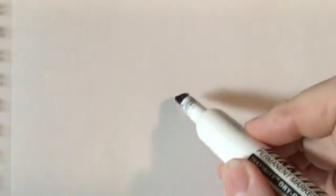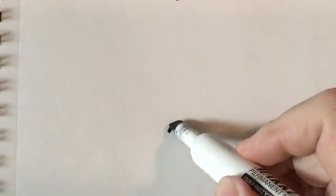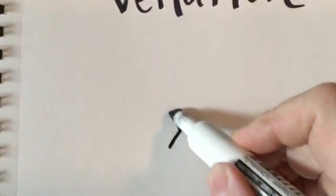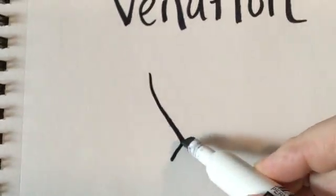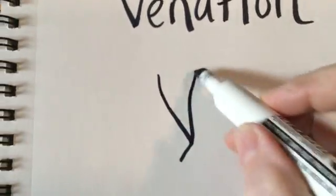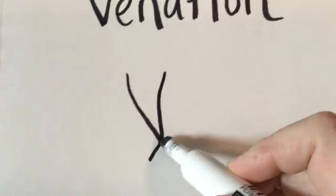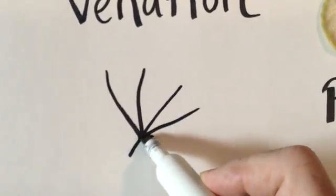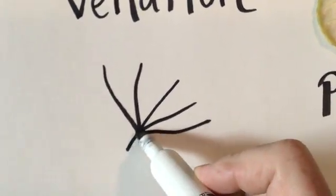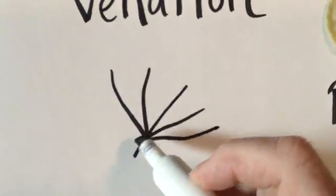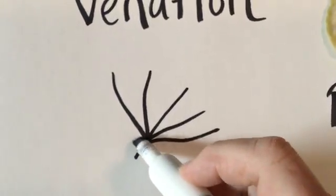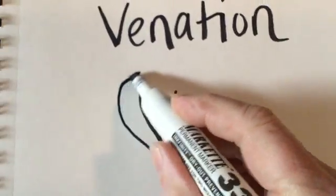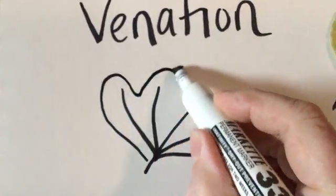Another common pattern of venation is palmate, where three or five or more strong veins all meet at a center stem point on a single leaf.